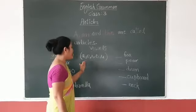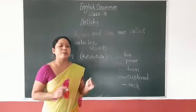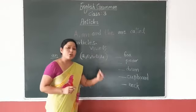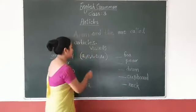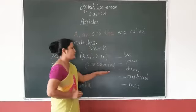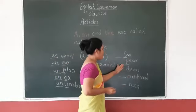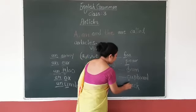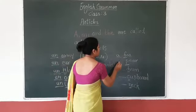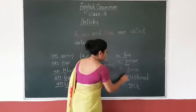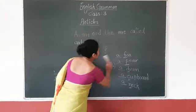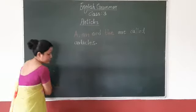Now let us look at consonants. We use A for words which start with consonants — letters like B, P, D, C, N. So we write: A box, A pier, A drum, A contour, and A neck.